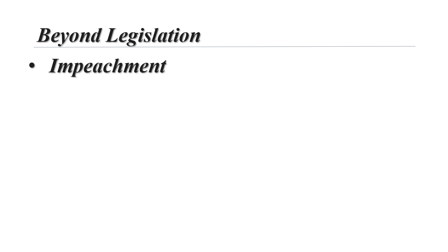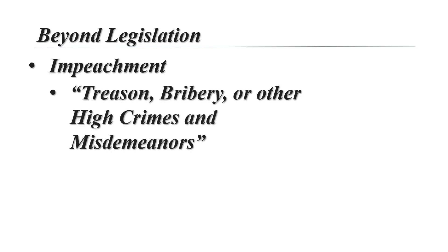Congress also has the authority to remove federal officials, including the president, through what's known as the impeachment process. The impeachment power is divided between the House and the Senate so that it would not be abused. Under this power, the House has the authority to charge or essentially impeach a president for treason, bribery, or other high crimes and misdemeanors. Since treason is outlined in the Constitution and bribery is pretty well defined, this leaves high crimes and misdemeanors as the only confusing or vague part. Congress can remove somebody for whatever it considers to be high crimes and misdemeanors — it doesn't actually have to be a violation of the criminal code, it just has to be something that Congress does not approve of.